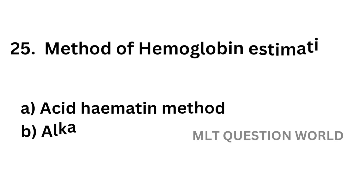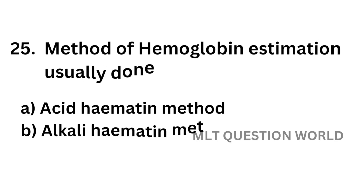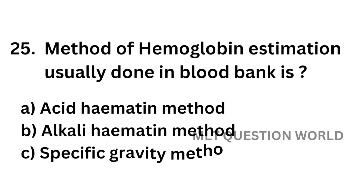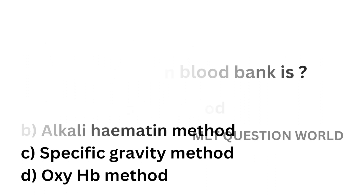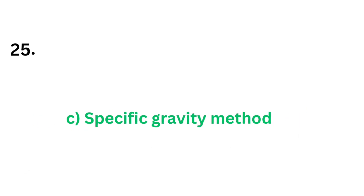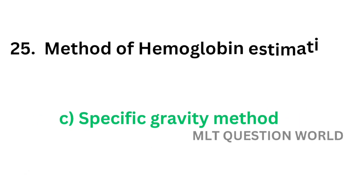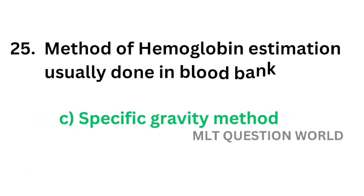Question number 25. Method of hemoglobin estimation usually done in blood bank is: Option A, acid hematin method; Option B, alkali hematin method; Option C, specific gravity method; Option D, oxyhemoglobin method. The correct answer is Option C, specific gravity method. Hemoglobin estimation in blood bank is done by specific gravity method.